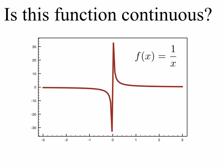Let's look at this example. The question is whether or not this function is continuous. It's the function f of x equals 1 over x, and we know that it has a vertical asymptote at x equals 0. So if I attempted to draw this function I would certainly have to pick up my pencil, and therefore this function is not continuous.